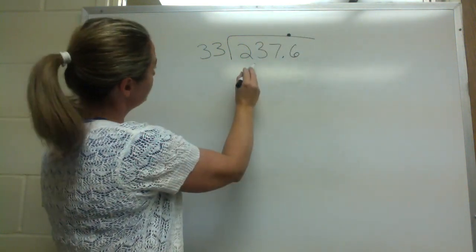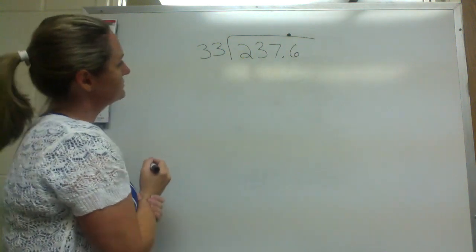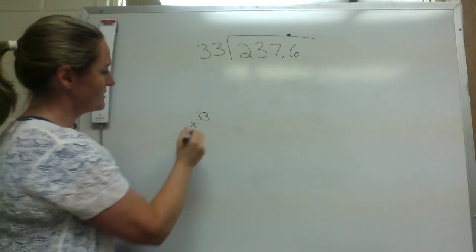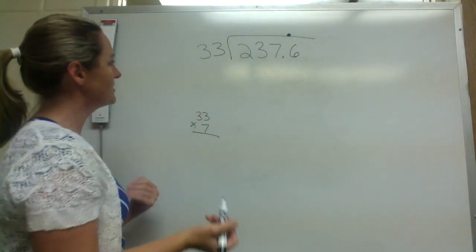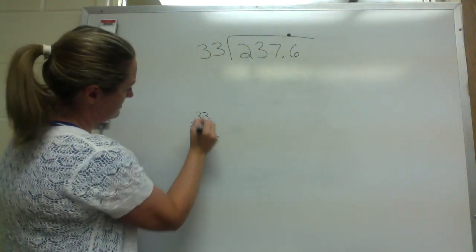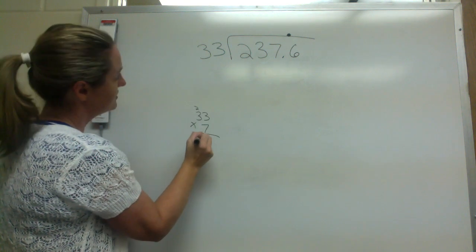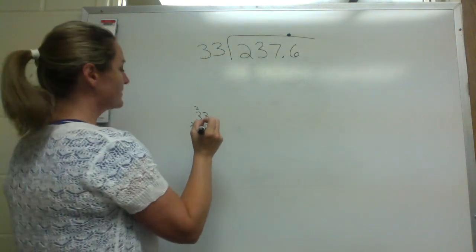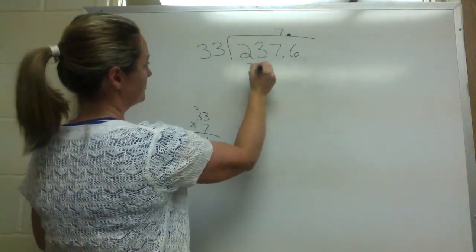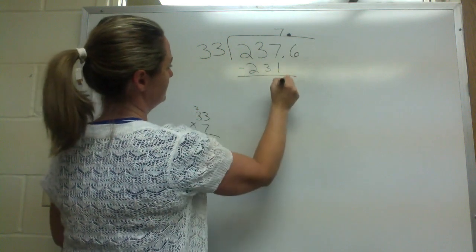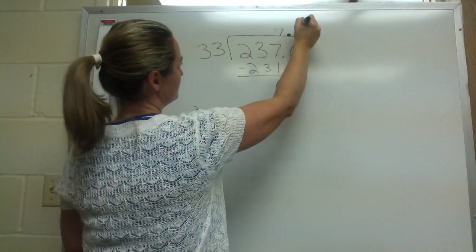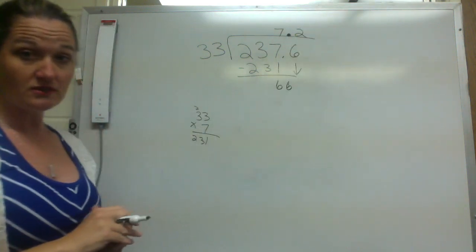33 goes into 23 — nope. 33 goes into 237 — best estimate, let's try about seven, because I know 30 times seven is about 210, so this will probably get me there. 231 — I don't think I can get much closer than that, so we're going to put a seven there. 231, six — then drop down this six. 33 goes into 66, two times. My answer is seven and two tenths.